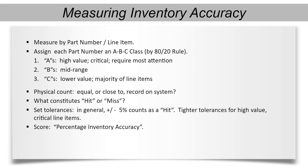For each ABC code, you will then determine an allowed range of variation in order to calculate accuracy. Logically, an A item will have a lower range of variability — maybe zero — and a C item will have a wider range. For C items, a plus or minus 5% range may be acceptable, with a plus or minus 2% range for B items, and a 0% range for A items. You decide what the ranges will be, but stay consistent in your measurements over time and make them reasonably ambitious.